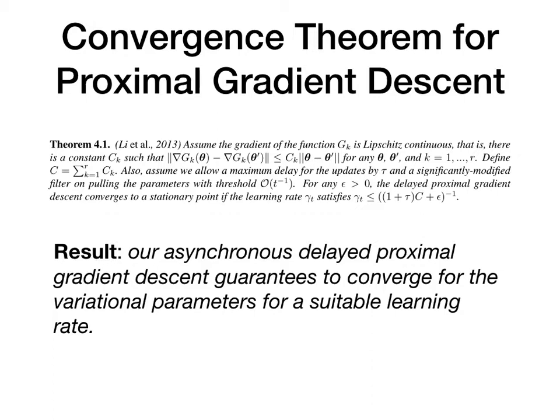The question is whether the gradient-based approach converges. The answer is yes for our variational parameters. Our lower bound has a Lipschitz continuous part and a convex part with respect to the variational parameters. According to the convergence theory of proximal gradient updates, the variational parameters of ADVGP will converge with a suitable choice of learning rate. In practice, we found that using the ADA-delta algorithm with suitable parameters, all the parameters can converge in most cases.